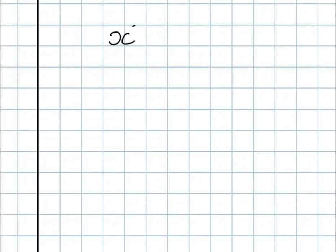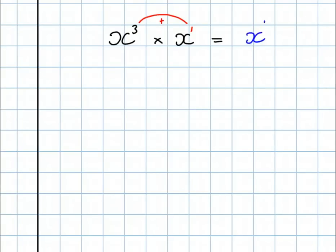Let's look at a couple more examples. x to the power 3 times x. I said earlier that very often, or most of the time, we don't bother with that power 1. So when I multiply x to the power 3 times x to the power 1, remember you add when you multiply — the final answer is x to the power 4.